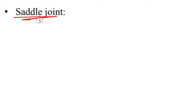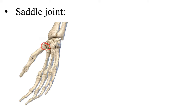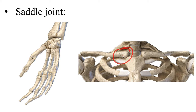Finally, we have the saddle joint — formed when the convex surface of one bone fits within the concave surface of another. For example, the trapezial metacarpal joint, where the convex base of the thumb metacarpal meets the concave trapezium carpal of the wrist. Also, the sternoclavicular joint, where the convex surface of the clavicle meets the concave surface of the sternum, is also known as a saddle joint.